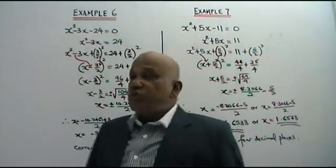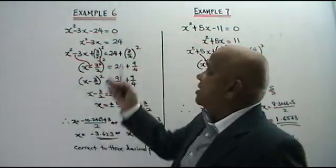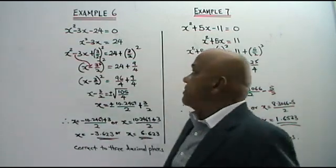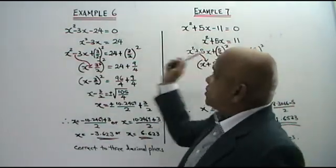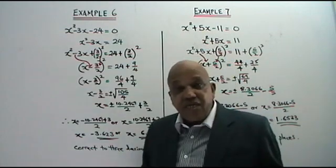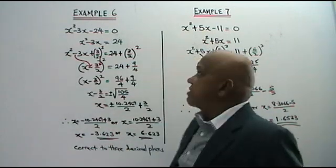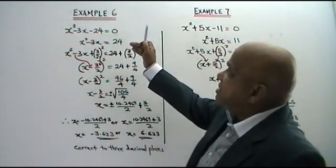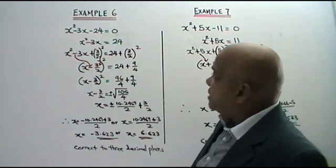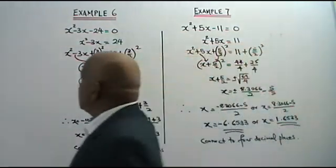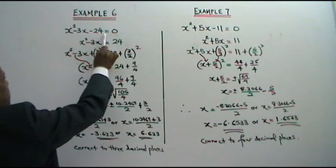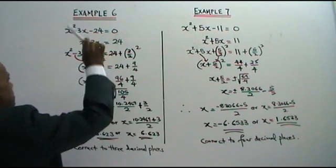Welcome to another two examples of quadratic equations, where we are supposed to solve these two equations by completing the square. Let's see example 6 first. You are given x squared minus 3x minus 24 equals to 0.